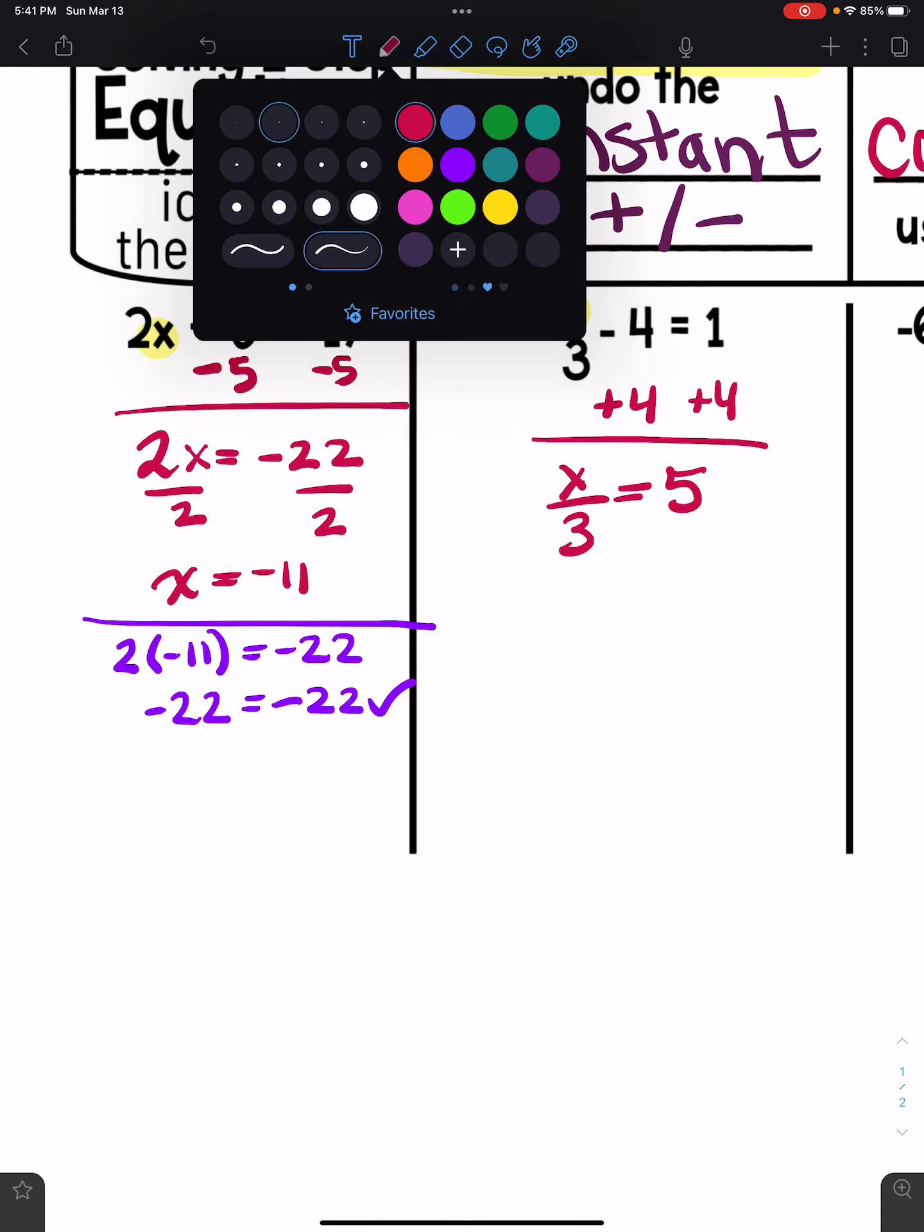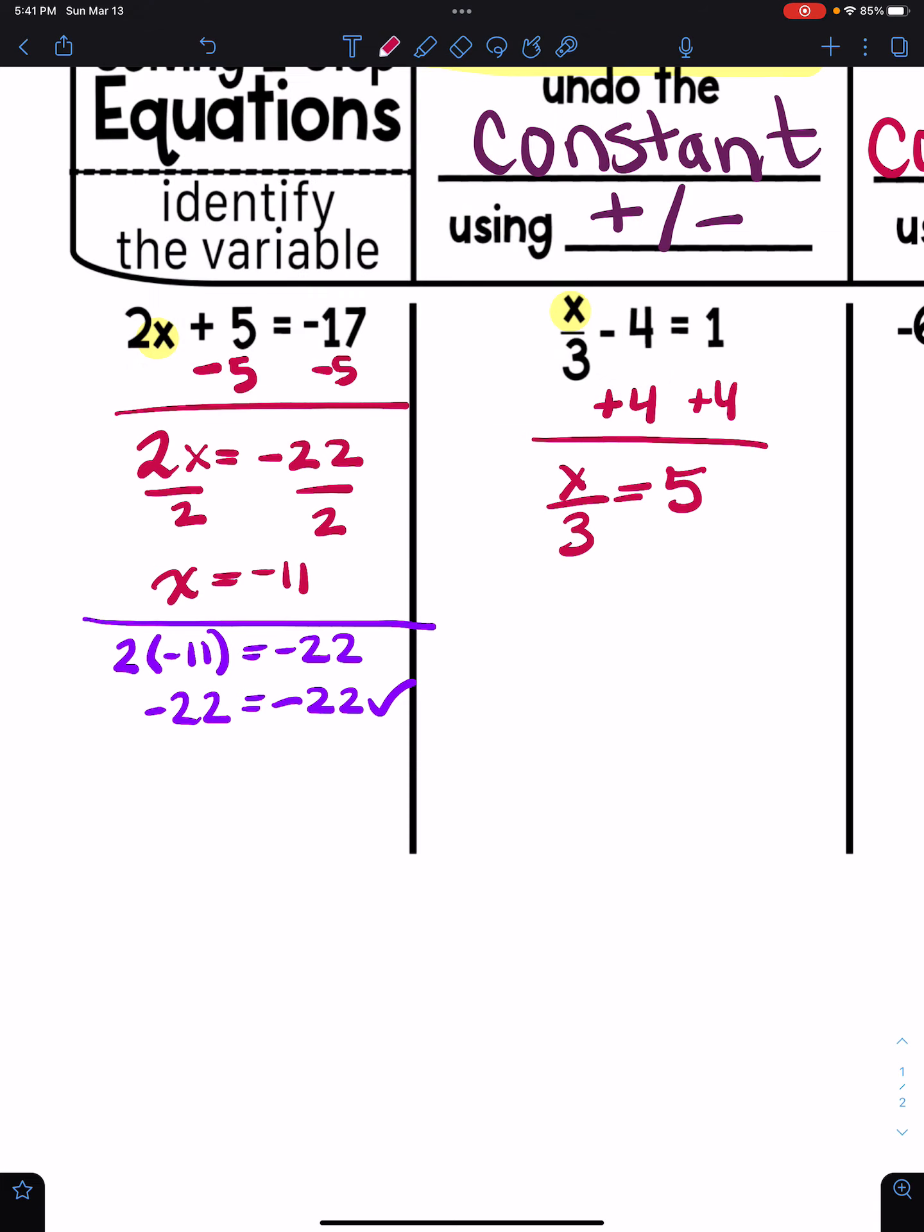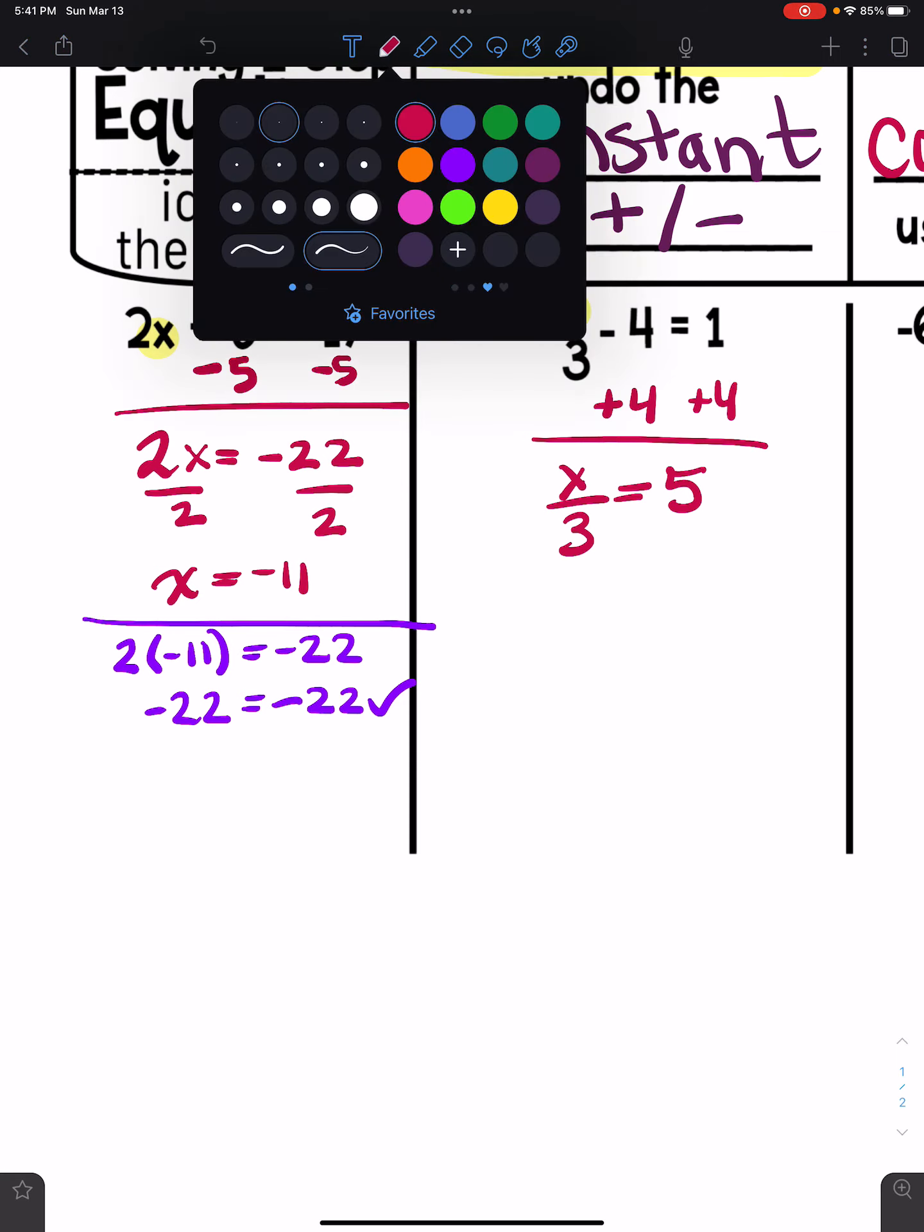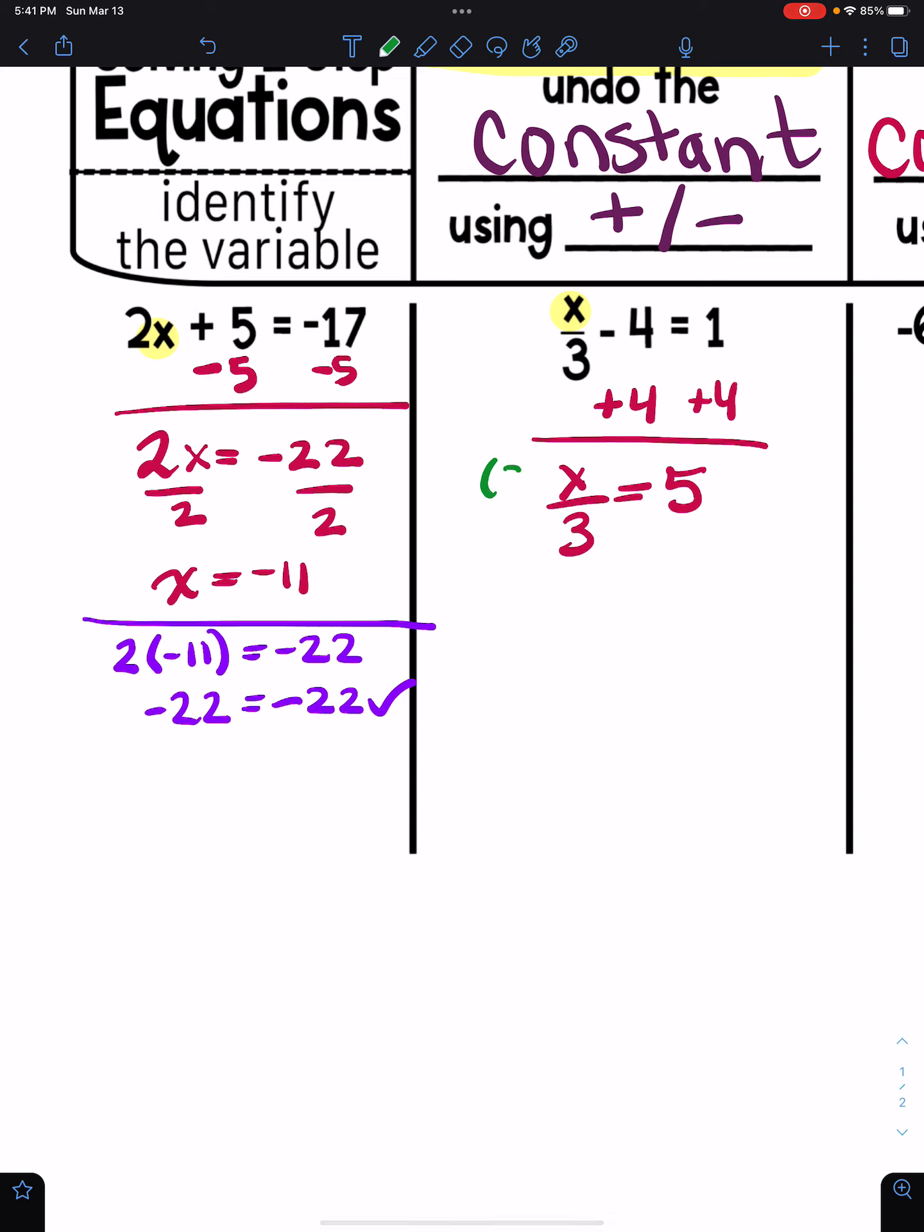Negative four plus four is zero. So now since x is being divided by three, the opposite is to multiply both sides by three. Here it cancels and I get x is 15. That's my answer.